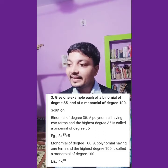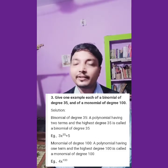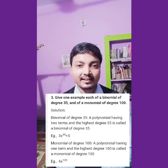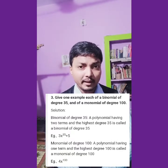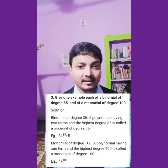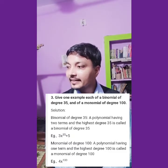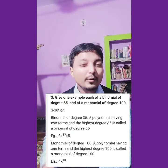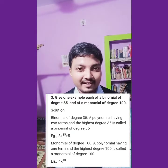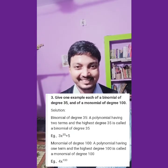Next: give one example of a monomial of degree 100. Monomial means a single term with degree 100. You can say a to the power 100, b to the power 100, 5a to the power 100, x to the power 100, y to the power 100, or 3 by 2 into x to the power 100. Many examples can be given.